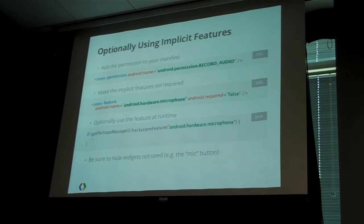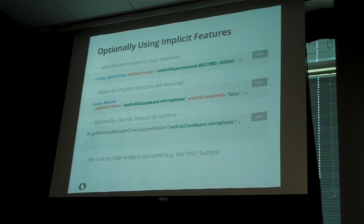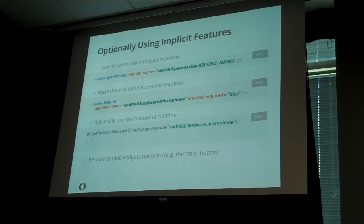The workaround is: if you want one app available on both handheld and Google TV devices, you can include that permission because you have to include it to use the APIs, then explicitly say that the feature is not required. You make the implicit feature not required by including the uses-feature tag for it. And you can optionally use the feature at runtime — when the app is running, you can check the platform, see if it supports a specific feature, and if it does, trigger the microphone support or camera feature in your application.